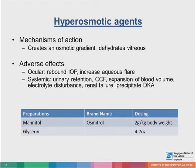Hyperosmotic agents reduce IOP by causing a reduction in vitreous volume, by creating an osmotic gradient between the vitreous and intravascular fluid. They may be administered orally or intravenously, and are generally more valuable in situations of acute intraocular pressure elevations. In angle-closure and ciliary block glaucoma, hyperosmotic agents work through reducing IOP and deepening of the anterior chamber through reduced vitreous volume. These medications should not be given chronically to treat glaucoma, due to potentially serious systemic side effects of electrolyte imbalance and kidney failure.